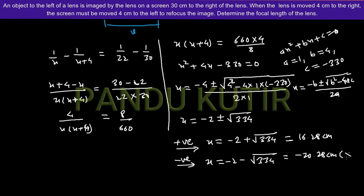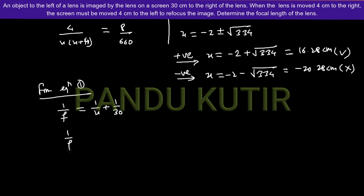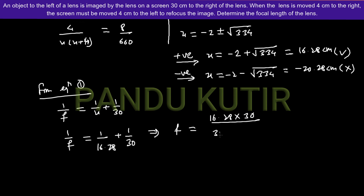The value with the positive sign gives u = −2 + √334 ≈ −20.28 cm. This value is negative because the real object convention applies. Substituting back into equation 1: 1/f = 1/16.28 + 1/30, which gives f = 10.55 cm.